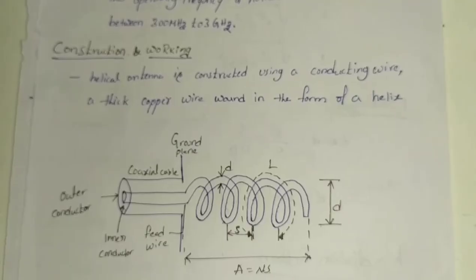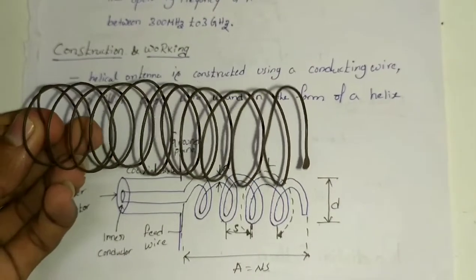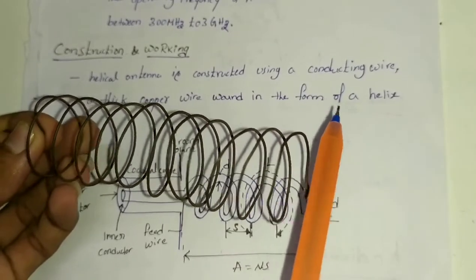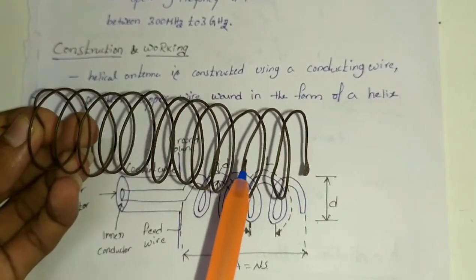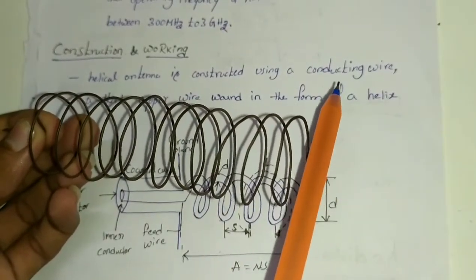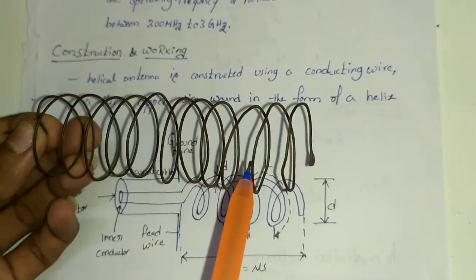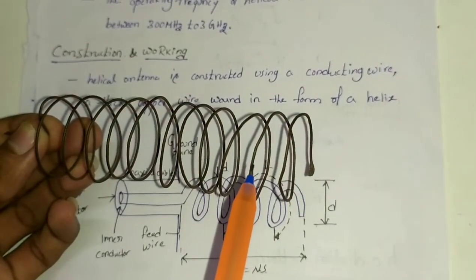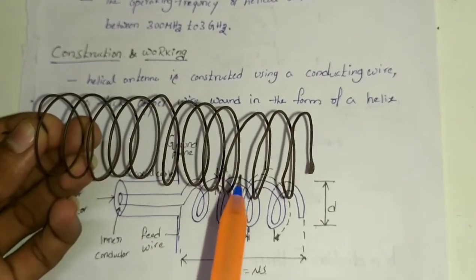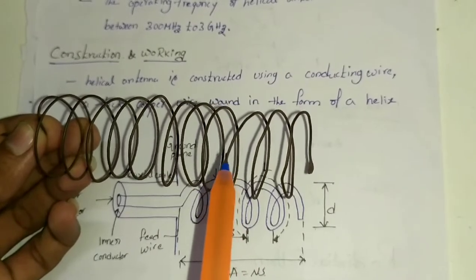For a better understanding, let's look at a helical model. The diameter of the helix is denoted by capital D, meaning the whole diameter of the helix. The diameter of the helical conducting wire is denoted by small d. The spacing between the two winding turns is s, and one complete turn is denoted by l.